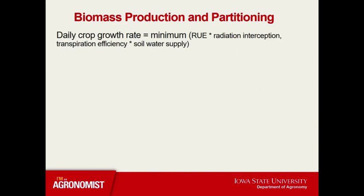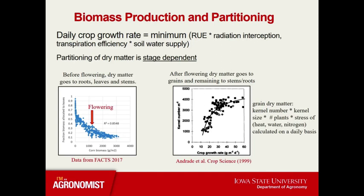Next is biomass production and partitioning. The model will calculate daily crop growth rate as a minimum of two estimates: one being limited by light — radiation use efficiency times radiation interception — and the other limited by water — soil water supply times transpiration efficiency, which has been adjusted for vapor pressure deficit. The model will then determine where this dry matter is partitioned, and this is typically stage dependent. Before flowering, dry matter primarily goes to the leaves, roots, and stems, as we see from real data from the 2017 FACTS experiment.